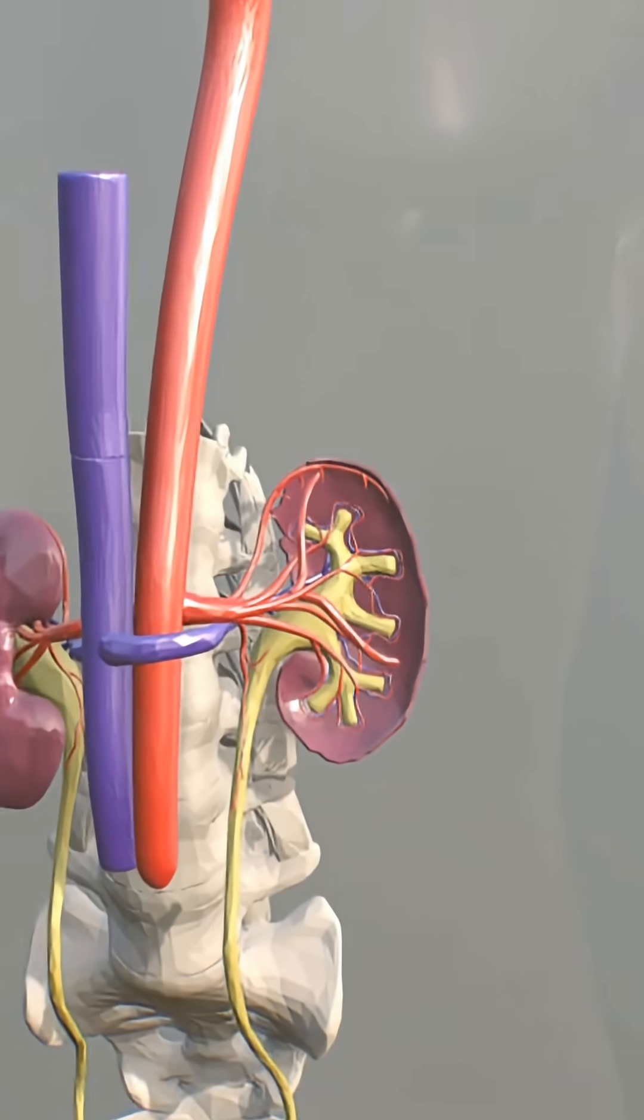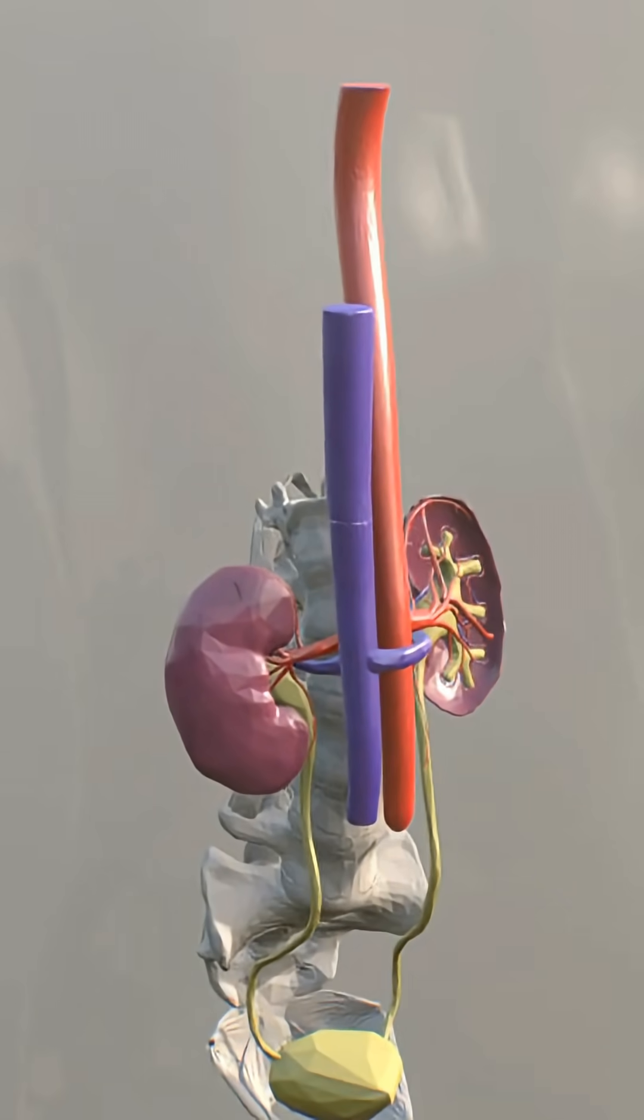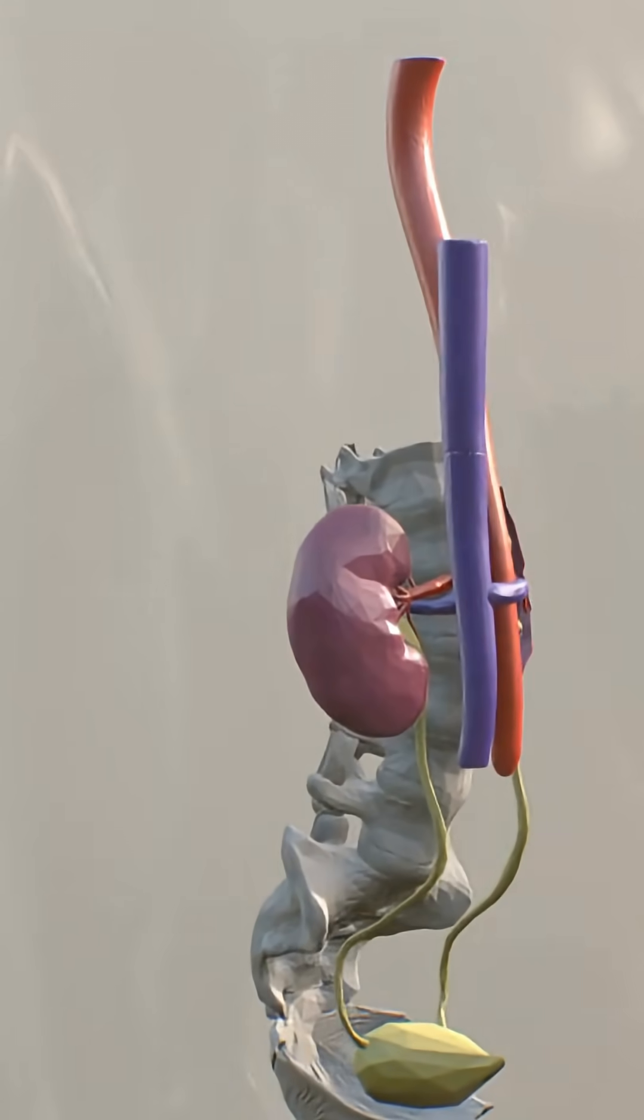Observe the red renal artery bringing oxygenated, unfiltered blood in and the blue renal vein taking clean blood out.